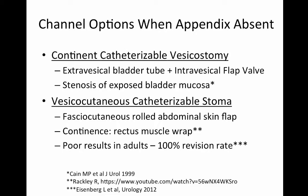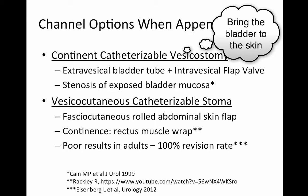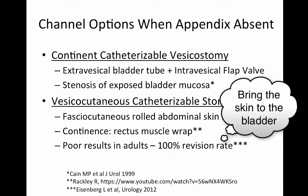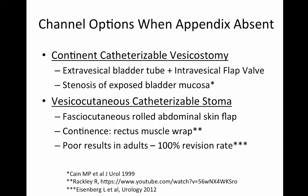A couple of procedures that have been described but are rarely used are ones that avoid harvesting any bowel when trying to create a catheterizable channel. These both involve making a stoma just out of skin and bladder. One involves creating an extravesical bladder tube similar to a Boari flap and then anastomosing that up to the skin, with an intravesical flat valve created for continence. The other involves a skin tube advanced down towards the bladder and the use of a rectus muscle wrap for continence. Both of these have not had excellent results in the literature and are not used very often.